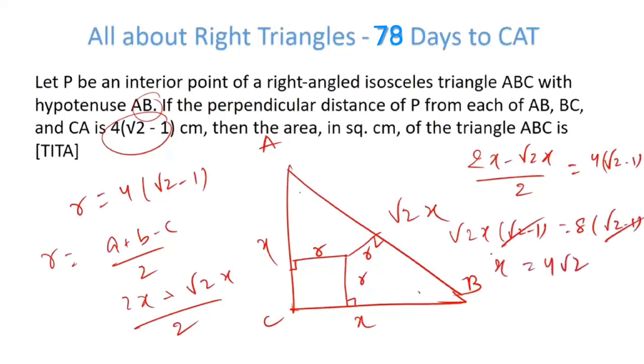So X becomes 4 root 2. So what's the area? Half into 4 root 2 into 4 root 2. So this becomes 32 by 2. The answer is 16. I hope all the questions are clear.